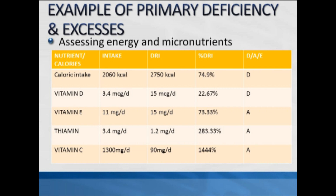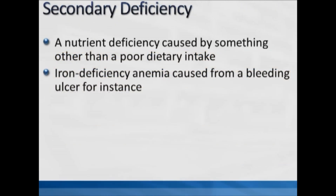Vitamin C intake is 1,300 milligrams against a DRI of 50 milligrams, giving 1,444 percent — which looks excessive. However, the only way to know if a micronutrient is excessive is by consulting the UL table at the end of chapter 3. The UL for vitamin C is 2,000 milligrams, so 1,300 milligrams, even though it is a large percent over the DRI, is still under the 2,000 milligram cutoff — vitamin C is therefore considered adequate.